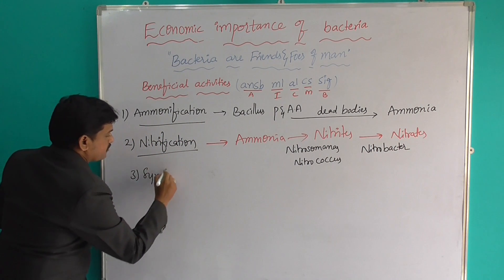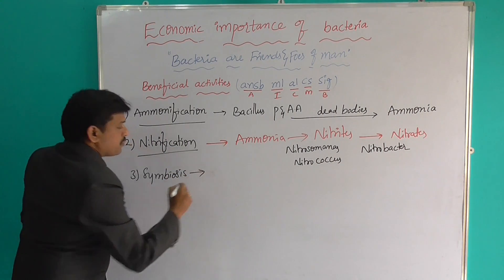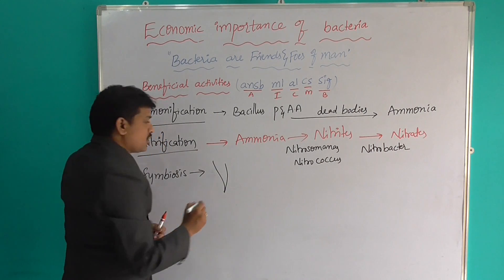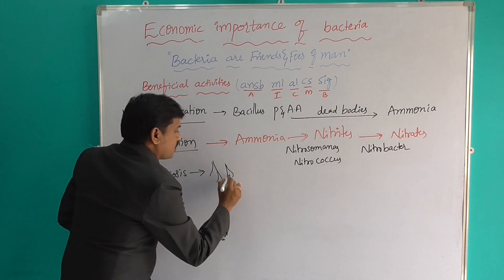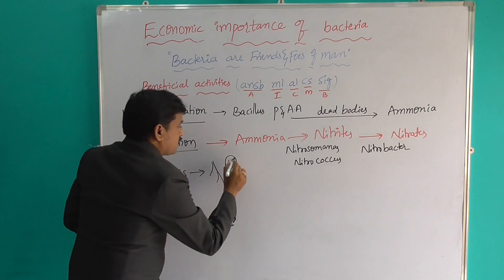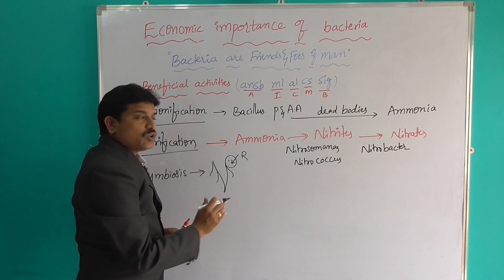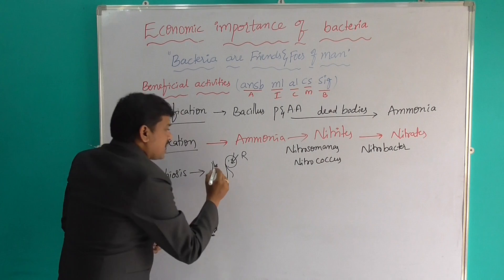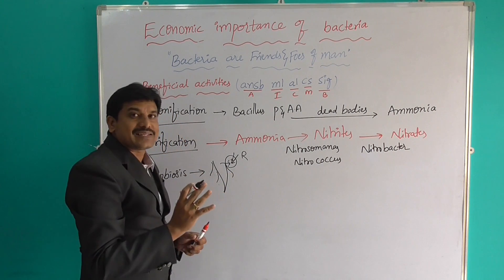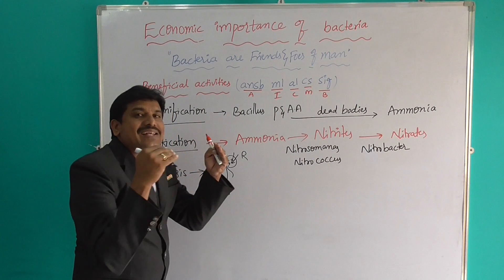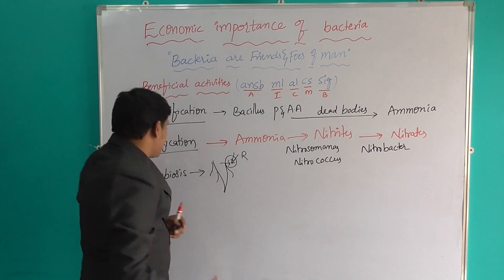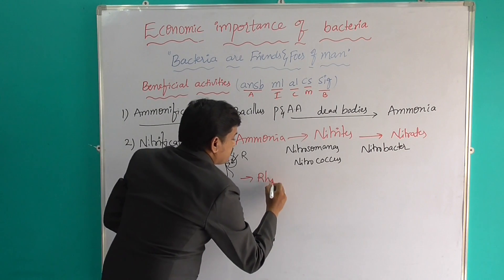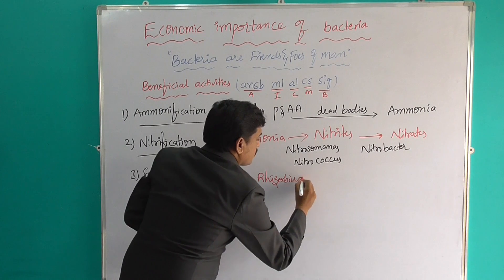The third beneficial activity is symbiosis of bacteria. On the surface of legume roots, nodules are present. Inside these nodules, Rhizobium bacteria are present. This Rhizobium bacteria fixes nitrogen and supplies it to the plant, and in return the plant provides living space and food materials to the bacteria. This mutual relationship is called symbiosis, and the best example is Rhizobium bacteria.